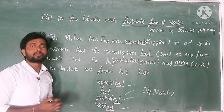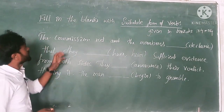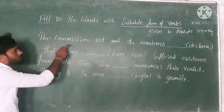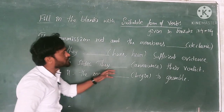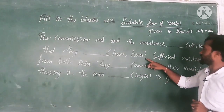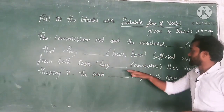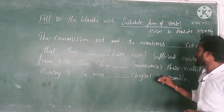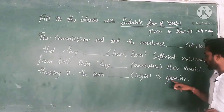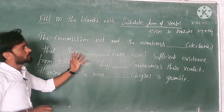Let's see another example. Fill in the blanks with the suitable form of the words given in brackets. The commission met and the members declared that they had heard sufficient evidence from both sides. That dash announced their verdict. The man began to grumble. How can we use the suitable form of the verb in brackets?